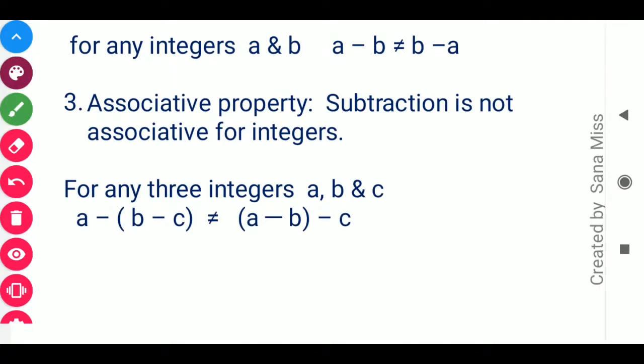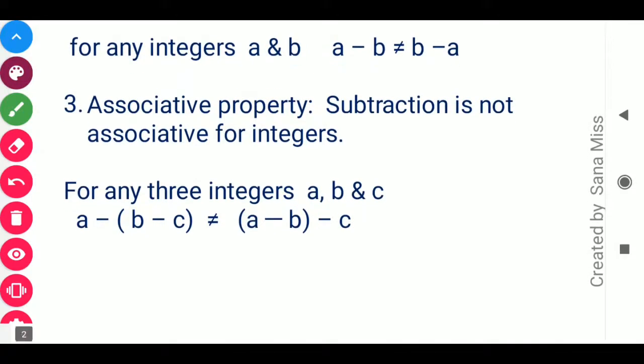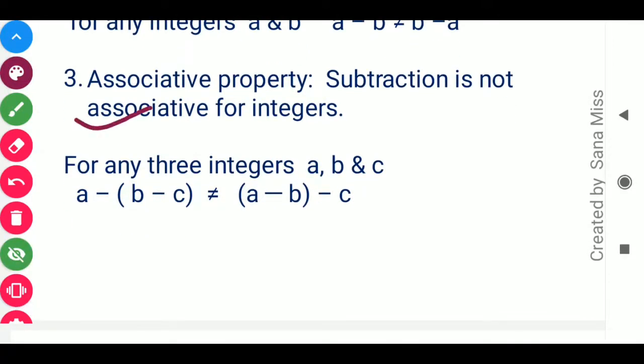Next is associative property. Subtraction is not associative for integers. For any three integers a, b, and c, the grouping is very important under subtraction — any grouping will not give the correct result. Unlike addition where any grouping gave the same answer, in subtraction it does not. You cannot say a minus (b minus c) equals (a minus b) minus c. Grouping matters, so associative property is false for subtraction of integers.